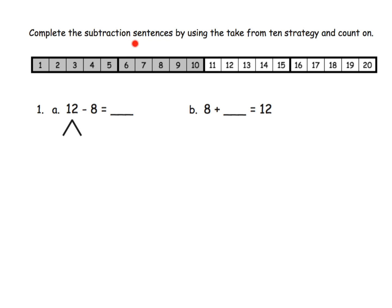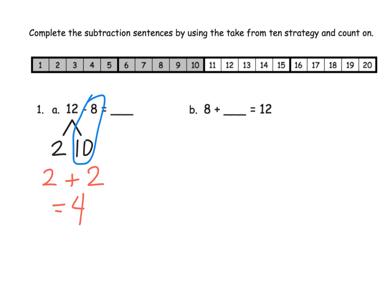The directions say: complete the subtraction sentences by using the take from 10 strategy and the count on strategy. We'll start with the take from 10 strategy. We've got 12 minus 8, and 12 we know can be decomposed to be 2 and 10. Then 10 minus 8 — there's the take from 10 strategy. So 10 minus 8 gives us 2, plus the original 2 gives us 4. That tells us 12 minus 8 is 4.